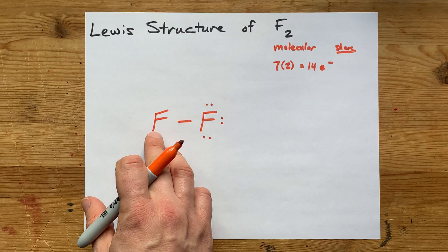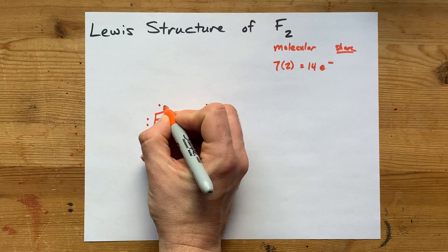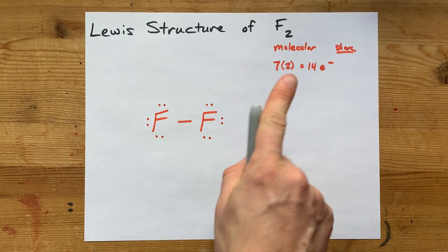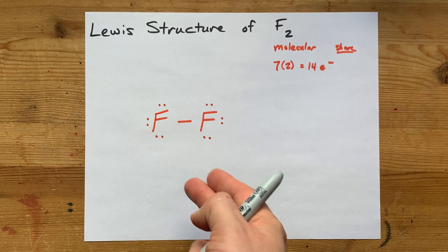And then I've got to complete the octet here as well with 9, 10, 11, 12, 13, 14. I'm already out of electrons. This is it. It's all the dots that I'm allowed to put on here.